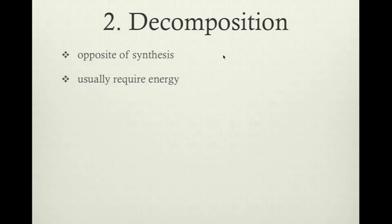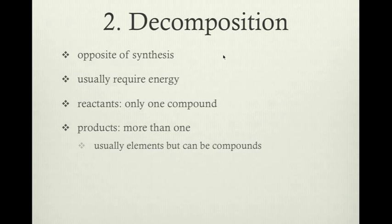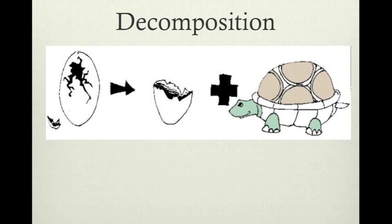Decomposition reaction is the exact opposite of synthesis. It usually requires some energy — either heat or electricity — to break things apart. The reactant is only one compound, and it breaks up into more than one product. The basic reaction shows the anion and cation separating back into their elemental form or into their compounds. A visual example: an egg breaks apart into two things — an egg and a turtle.